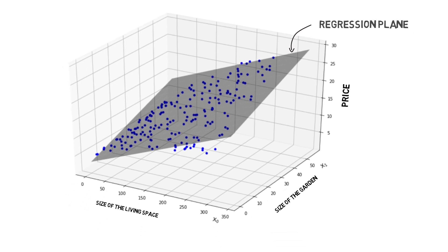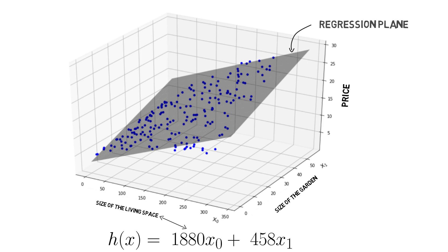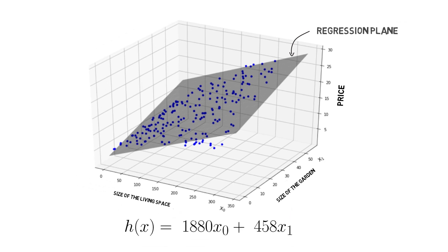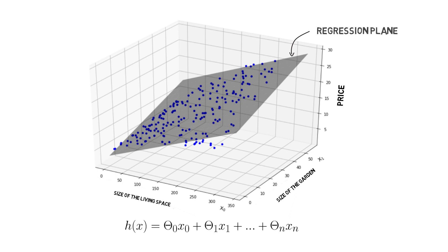The mathematical representation of multiple linear regression is shown here. For this particular example, each one unit increase in square meters of living space will increase the price of the house by 1,880 euros. Likewise, for each one unit increase in the second independent variable, garden size, the final price will be increased by 458 euros.